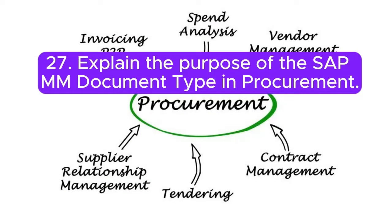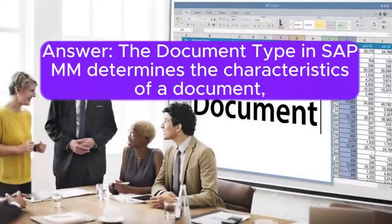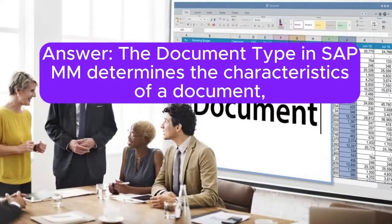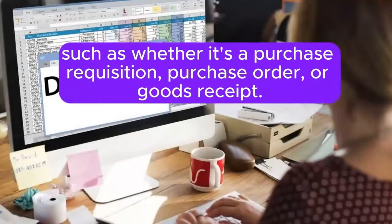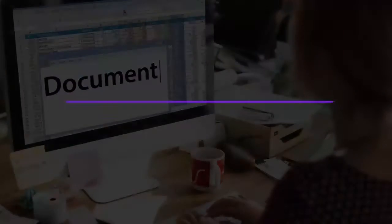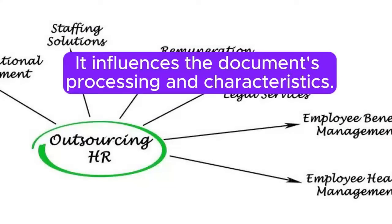Question 27: Explain the purpose of the SAP MM document type in procurement. Answer: The document type in SAP MM determines the characteristics of a document, such as whether it's a purchase requisition, purchase order, or goods receipt. It influences the document's processing and characteristics.